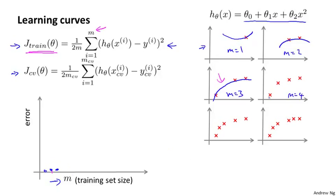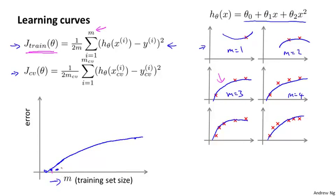If I have m equals four examples, a quadratic function can no longer fit this data set perfectly. And if I have m equals five, maybe a quadratic function can fit this data so-so. But as my training set gets larger, it becomes harder and harder to find a quadratic function that passes through all my examples perfectly. So as the training set size grows, the average training error actually increases. When m is small, it's pretty easy to fit every single training example perfectly, so your error is small. Whereas when m is larger, it gets harder to fit all your training examples perfectly, and your training set error becomes a little bit larger.